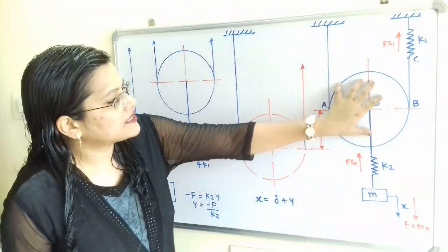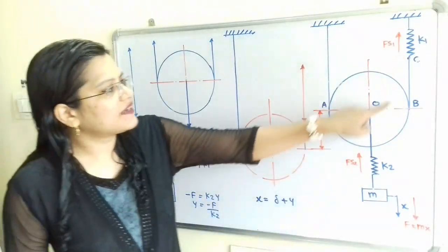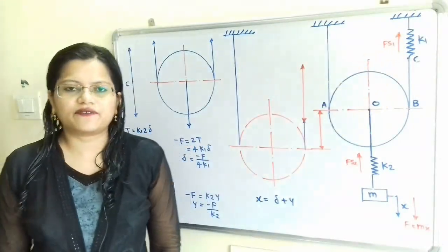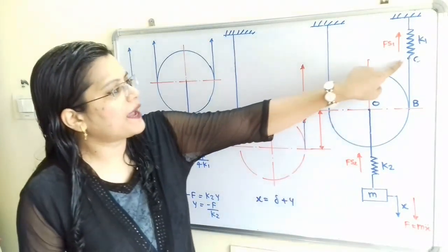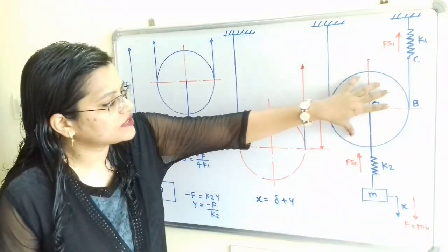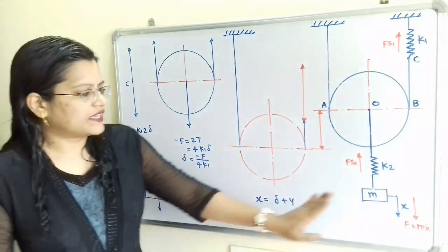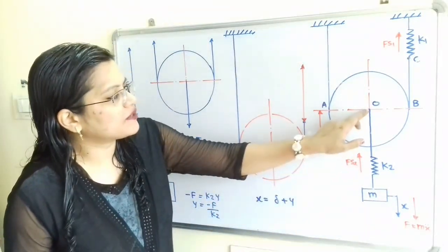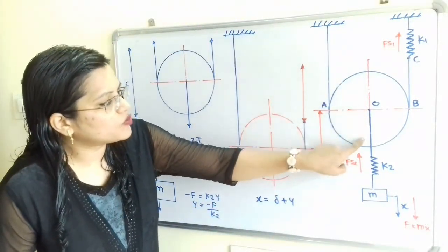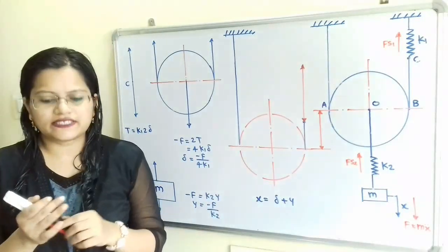When this pulley is getting rotated along this inextensible cord, here is the point C — the point of connection between this cord as well as the spring with stiffness K1. So what will happen to this point C? We will consider that this whole pulley, that is this whole system, will move in the downward direction because this mass M is also moving in the downward direction. This mass M is connected to the center of the pulley, so this point O will also displace from O to O-dash in the downward direction, and this displacement of the pulley we will consider as delta.